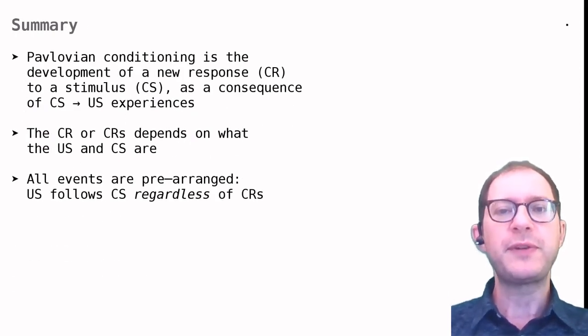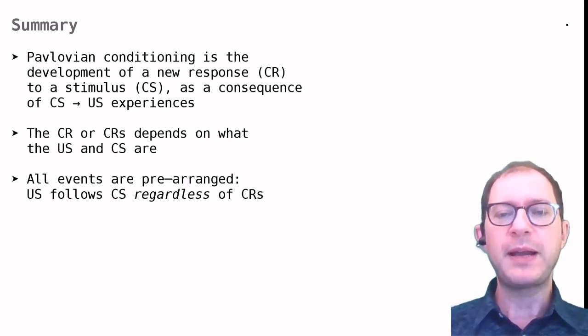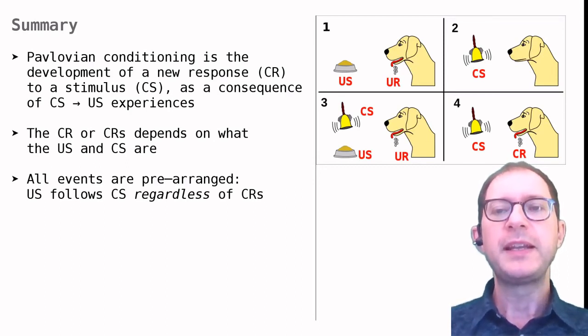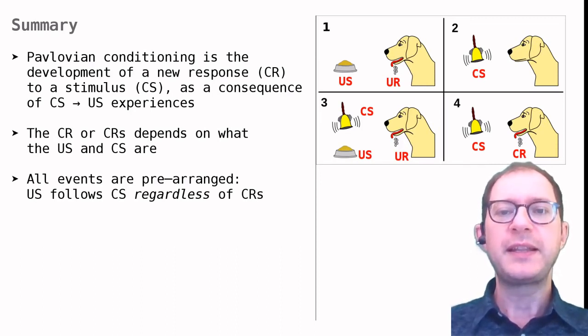Let's summarize what we have learned so far about Pavlovian conditioning. Whenever we think about Pavlovian conditioning, it's useful to keep in mind Pavlov's original experiment. In Pavlovian conditioning, animals learn a new response, called the conditioned response, or CR for short. In this case, salivation. The animal performs the CR when it perceives a stimulus, called the conditioned stimulus, or CS. In this case, a sound. This learning is a consequence of the CS being experienced before an unconditioned stimulus, or US, here food. What makes a stimulus unconditioned is simply the fact that it produces an unconditioned response, or UR. Here the UR is salivation.